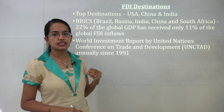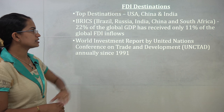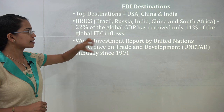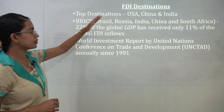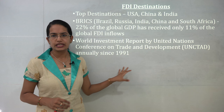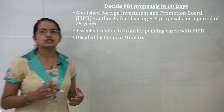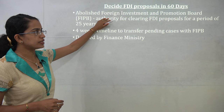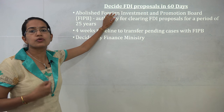The major FDI destinations globally: the top 3 are the United States, China, and India. The BRICS nations together have 22% of global GDP but get only 11% of global FDI inflows. This report was the World Investment Report developed by UNCTAD, which has been published since 1991. The next is the idea to decide FDI proposals in 60 days, done in line with the abolition of the Foreign Investment Promotion Board to provide ease of doing business and promote more startups. A 4-week timeline has been given to transfer all pending cases from FIPB, decided by the Finance Ministry.